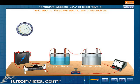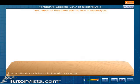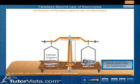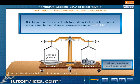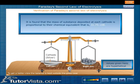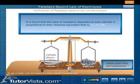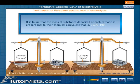Remove the cathodes and find the mass of each cathode. It is found that the mass of the substance deposited at each cathode is proportional to the chemical equivalent — that is, 31.75 is to 108. This proves the second law.